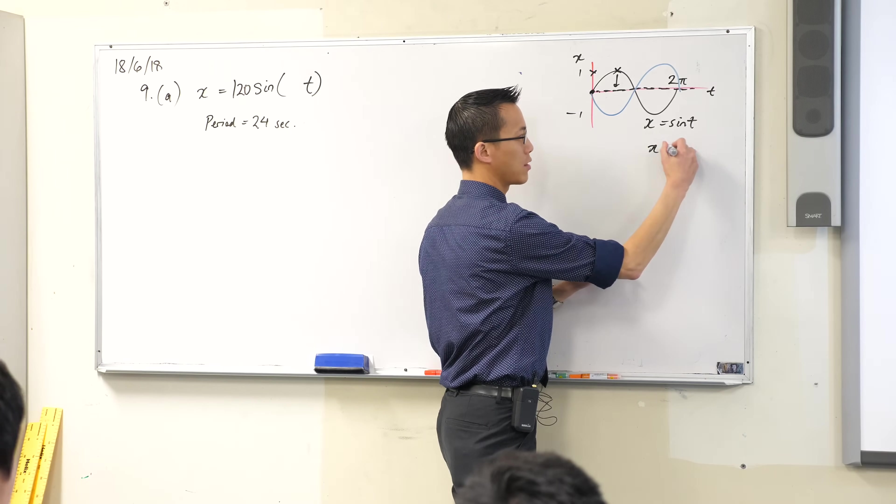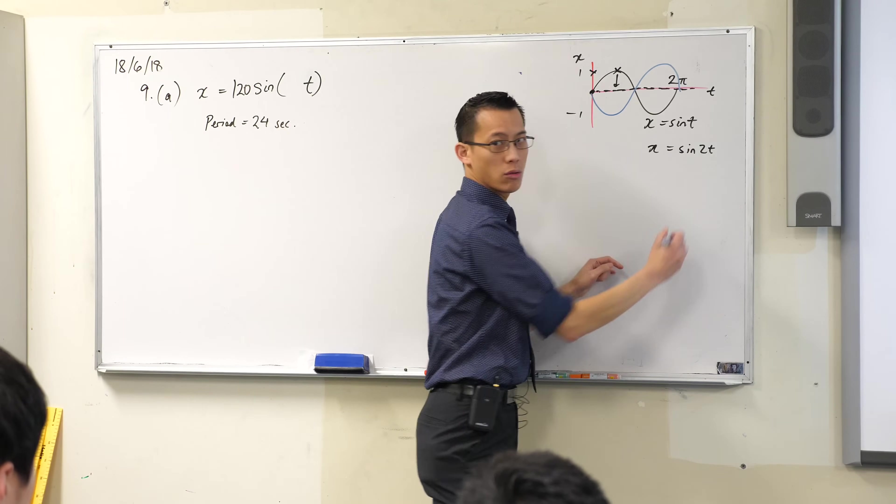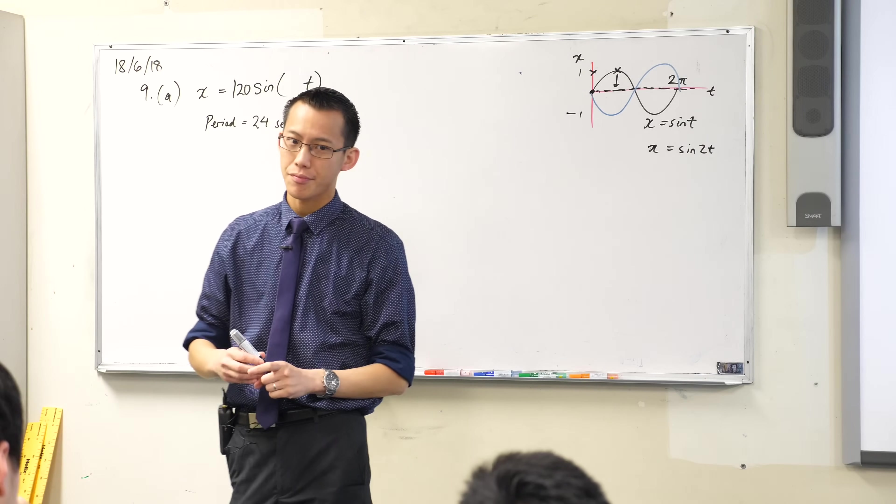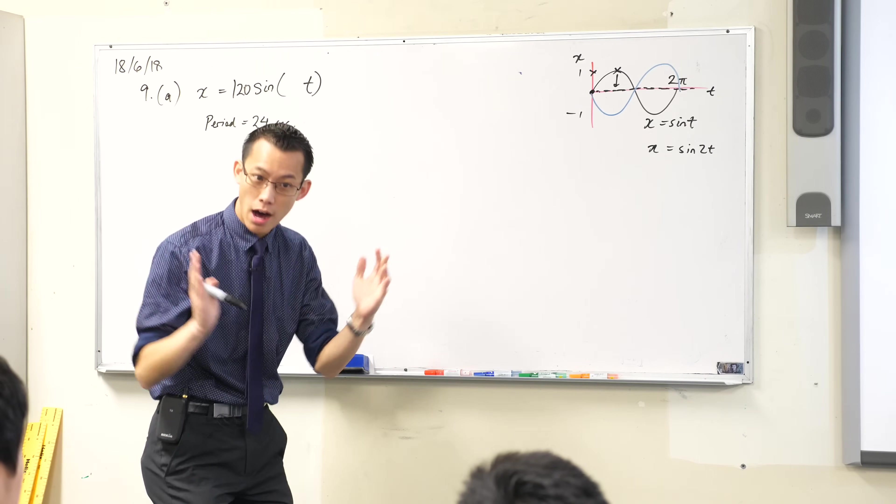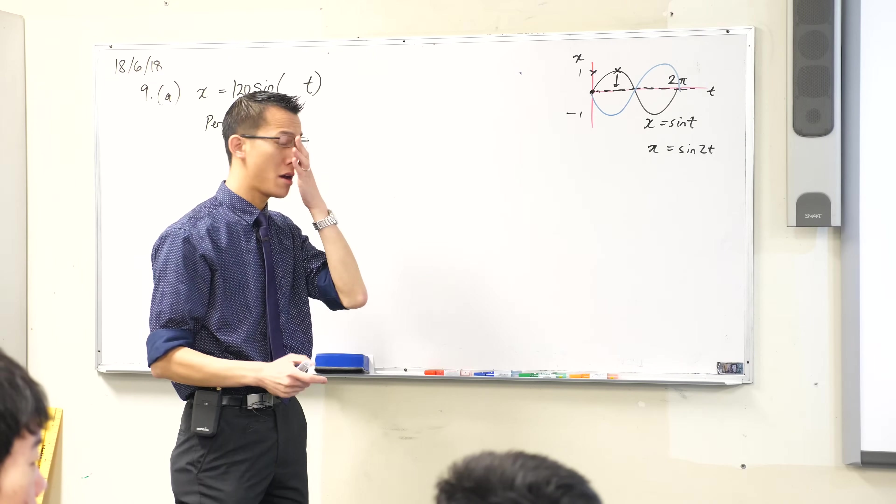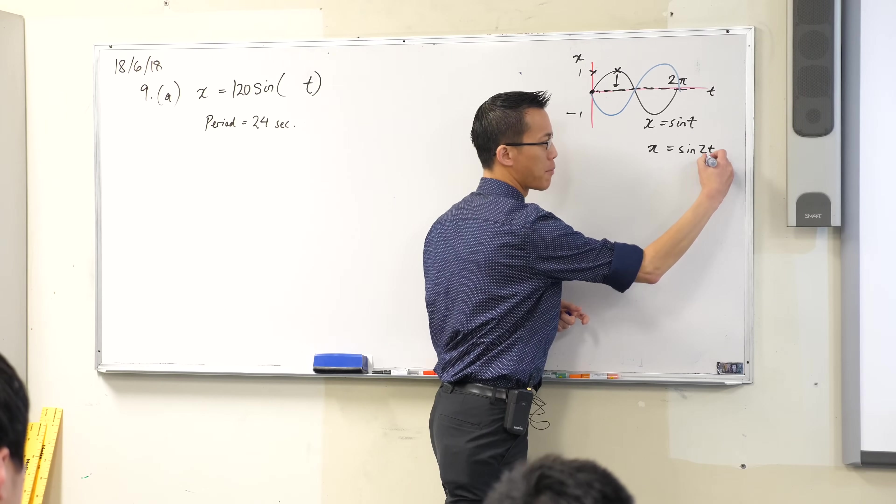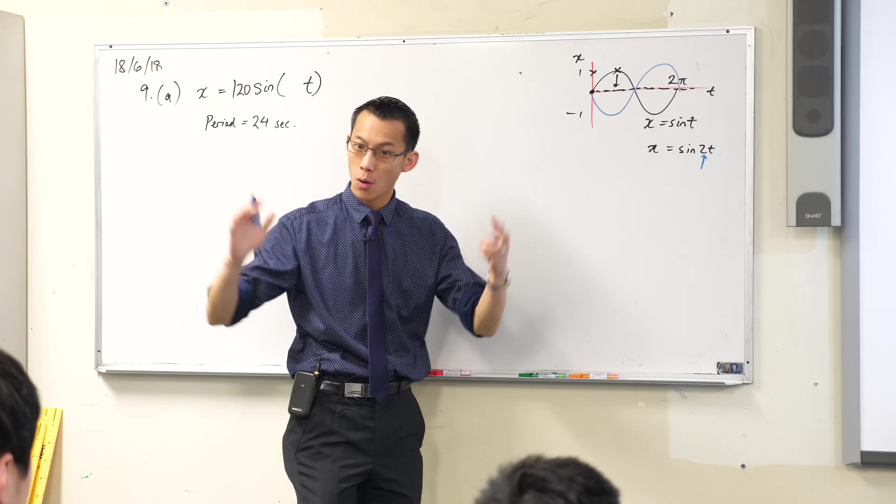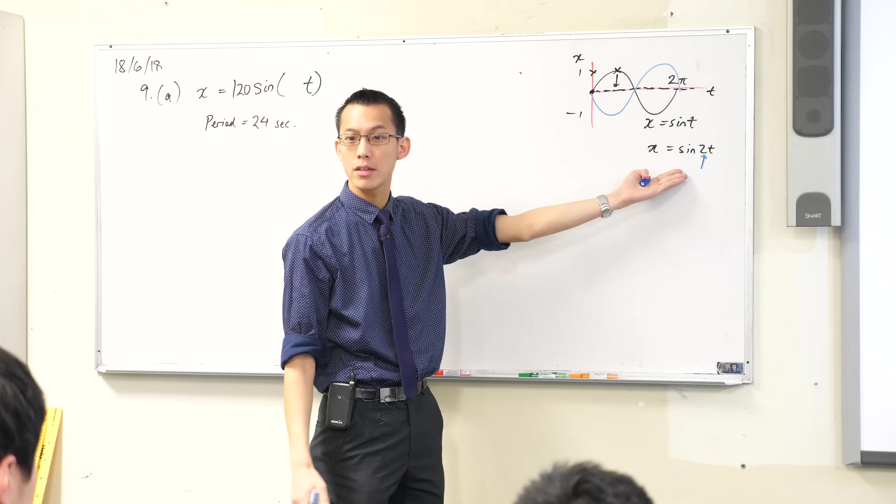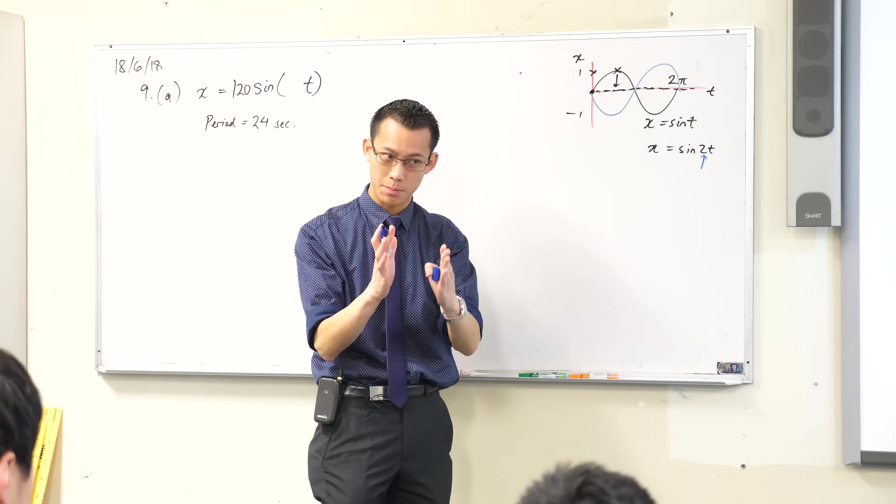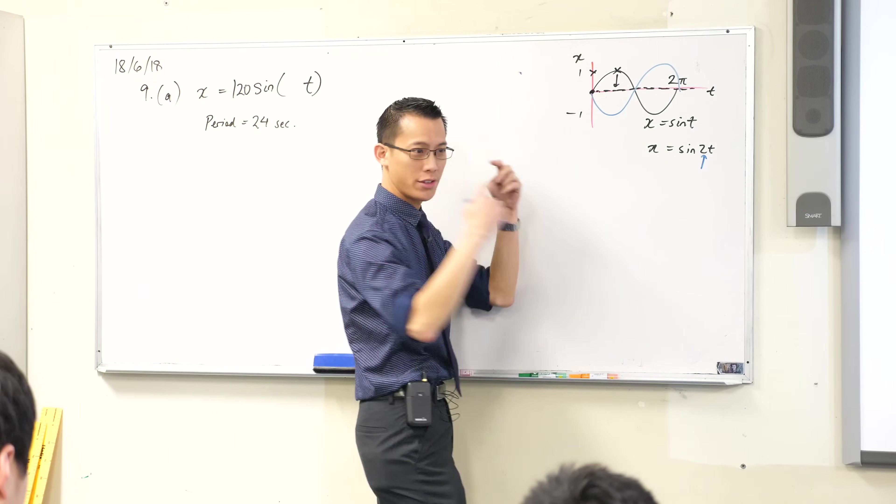What if I had x equals sine 2t? What would the period be now? It would be halved, it would be just π seconds, right? One of the ways I like to think about it is that it all starts from 2π and you get this number of copies of the graph within 2π, so you're going to get two copies within 2π. That's why the period is π.